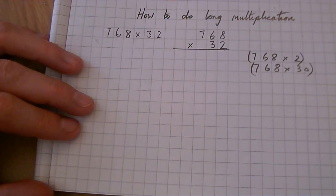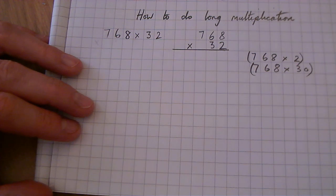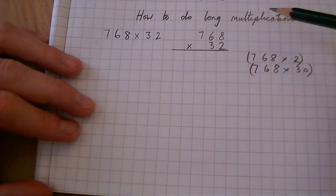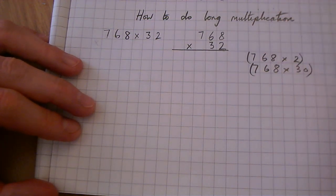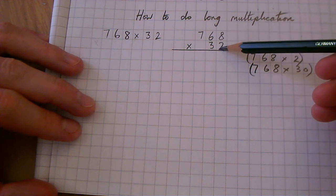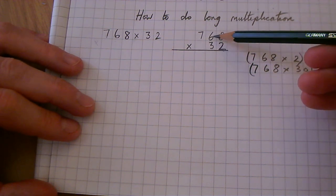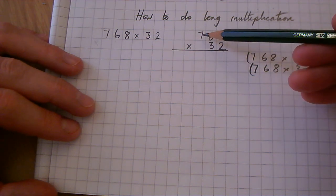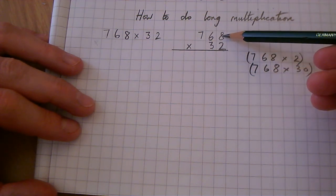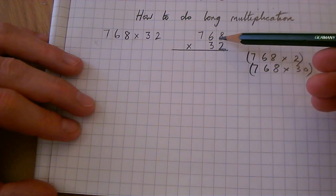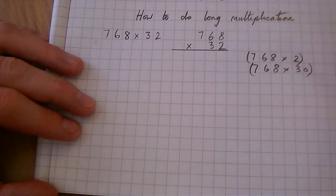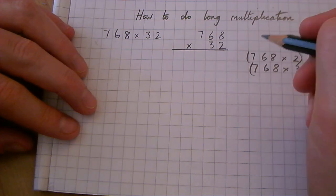So the first thing we're going to do is 768 times 2. When we do this method, like short multiplication, we're going to do 2 times 8, then 2 times 6, then 2 times 7. So we do the ones times the ones, the ones times the tens, the ones times the hundreds. Let's make a start.